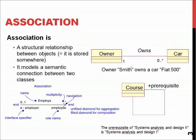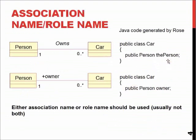In this example, it means that the owner owns a car — a Fiat 500. It may also indicate how many cars they own. For example, each car has only one owner, but each owner may have from zero to any number of cars.